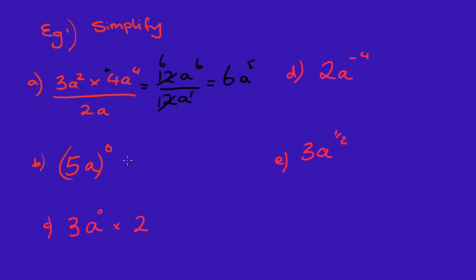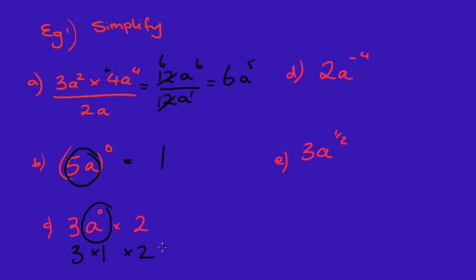The next question: the power of zero is working on both the 5 and the a, so the answer is simply 1. Question c: the power is only working on the a, so we've got 3 times 1 times 2, which equals 6.